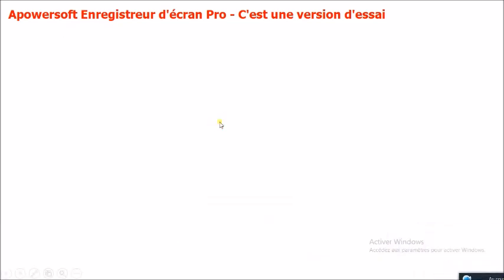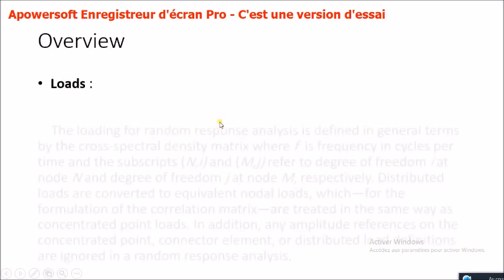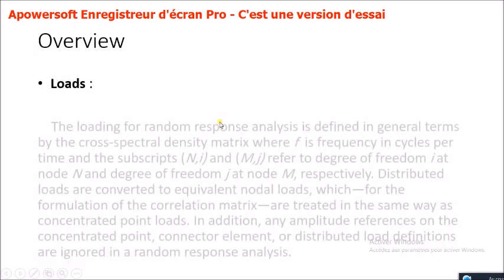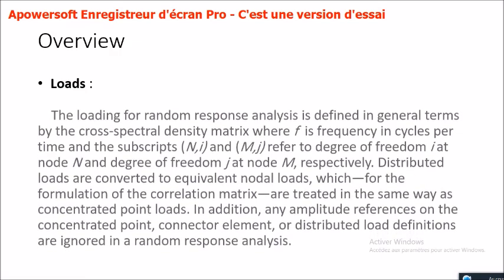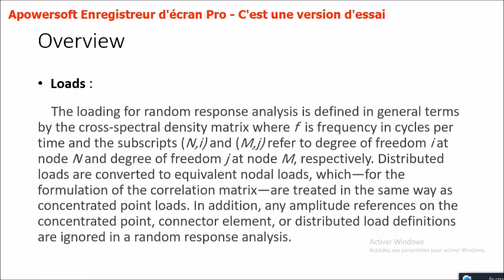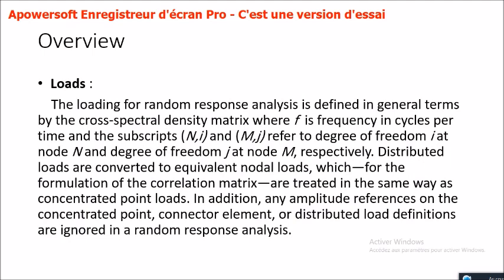The loading for random response analysis is defined in general terms by the cross-spectral density matrix, where f is frequency in cycles per time, and the subscripts n,i and n,m,j refer to degree of freedom i at node n and degree of freedom j at node m, respectively.